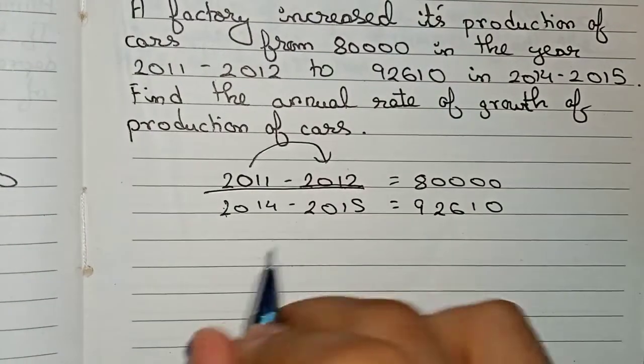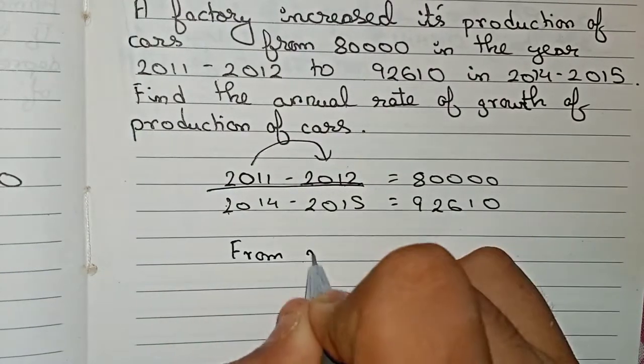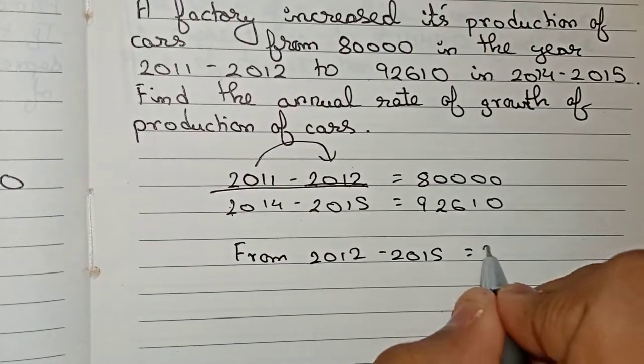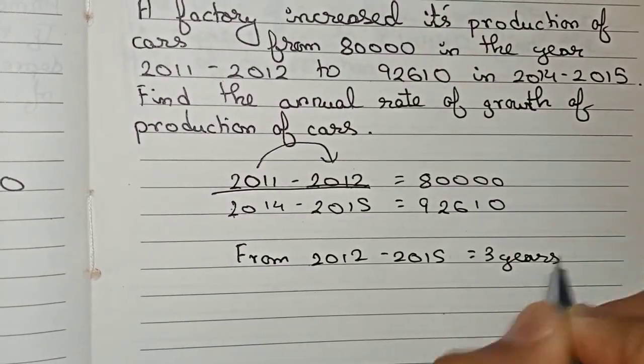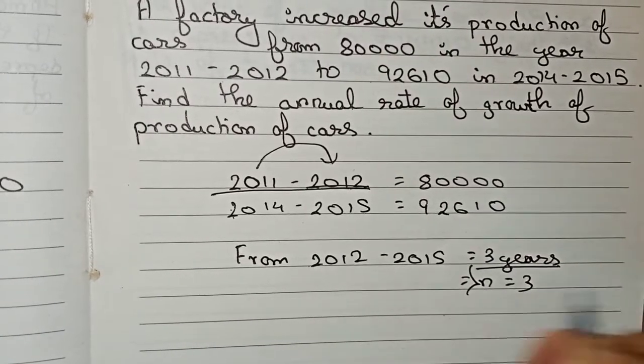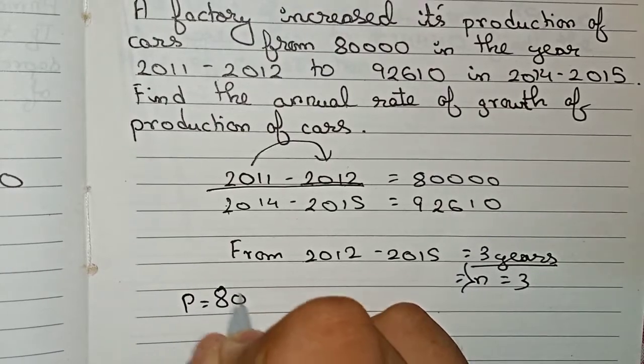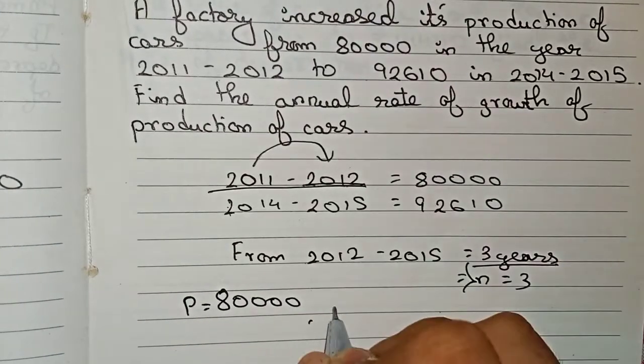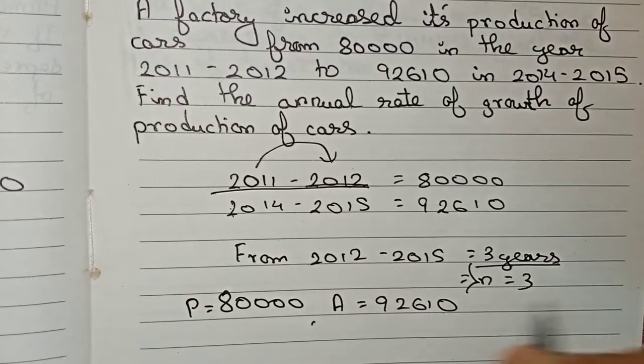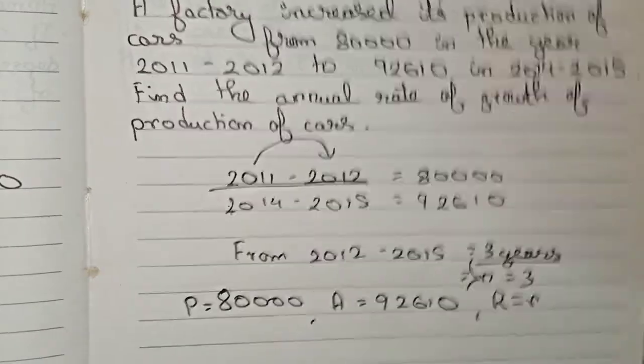So therefore you can write that from 2012 to 2015 the time is 3 years. So 3 years will become our time, so n equals 3. And our principal is 80,000 and our amount is 92,610, and the rate of interest is unknown, so take it as r. So now I put down our values.